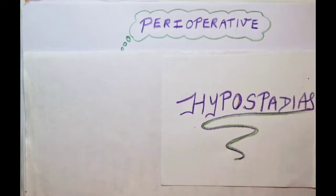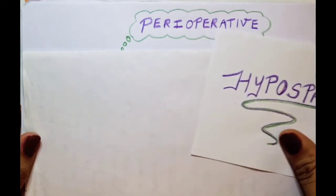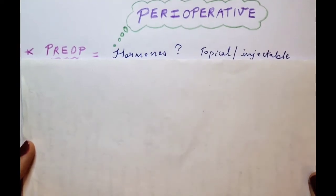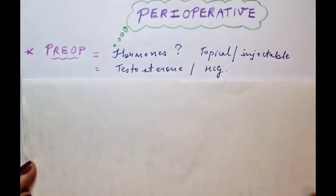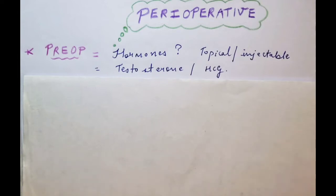Regarding perioperative considerations in the management of hypospadias — preoperatively, whether to give hormones or not is a debatable question and depends on the center. Some prefer to give topical testosterone or an injectable two-day regimen of testosterone, and some centers prefer to give HCG hormone depending on the requirement. If the penile region is very small and in certain conditions associated with other syndromes, these hormones are helpful in increasing the size of the phallus, increasing the vascularity of the tissues, and helping the area become mature enough to be operated on. Whether to give it as topical or injectable form is surgeon and center dependent.